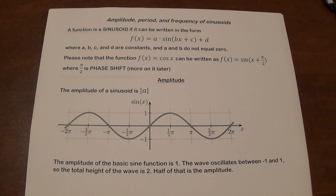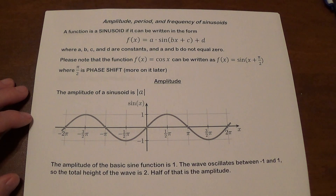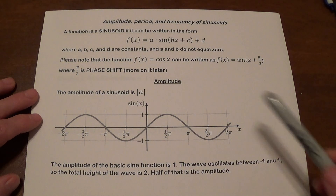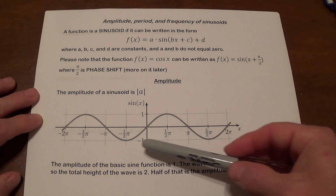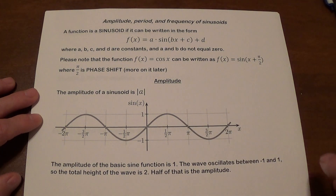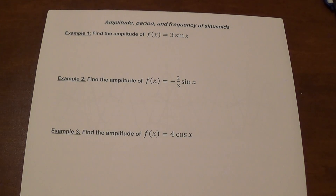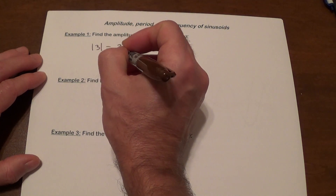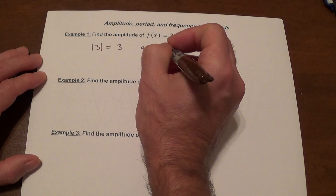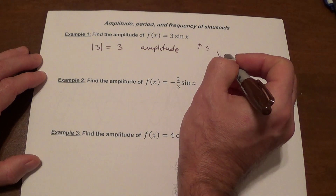The amplitude is going to be the absolute value of the number that sits in front of your sine or cosine function. The basic sine function has an amplitude of 1, which means it goes as high as 1 and as low as negative 1. The total height of the wave is 2 and the amplitude is half of that. So to find the amplitude, take the absolute value of a — absolute value of 3 is 3, which is our amplitude.